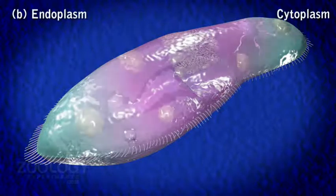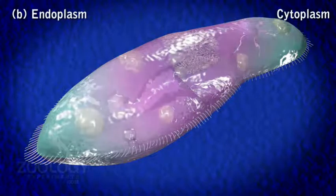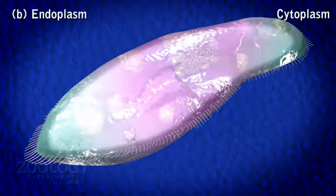The prominent endoplasmic organelles are nuclei, contractile vacuoles, and food vacuoles.